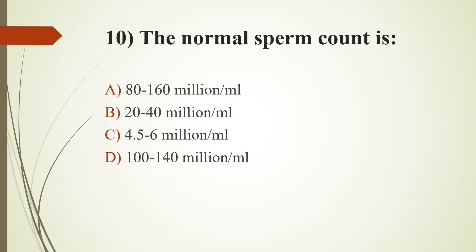Tenth question: The normal sperm count is — Option A: 80 to 160 million per ml. Option B: 20 to 40 million per ml. Option C: 4.5 to 6 million per ml. Option D: 100 to 140 million per ml. Answer is Option A, 80 to 160 million per ml. Other conditions include oligospermia, a condition of low sperm count, and azoospermia, which means complete absence of sperm in semen.